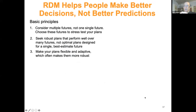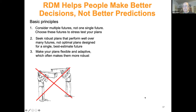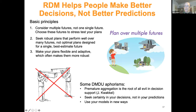RDM and these decision-making-under-deep-uncertainty methods help people make better decisions, not better predictions. The basic principles are: consider multiple futures, not a single future; choose futures to stress test plans; seek plans which are robust over a wide range of futures. This often means making plans flexible and adaptive in order to make them more robust. Rather than predict-then-act, we look over multiple futures. Premature aggregation — either in probabilities or in values — can mess up your decision support. Seeking certainty is in decisions, not predictions. And this enables you to use models in new and very interesting and often very helpful ways.